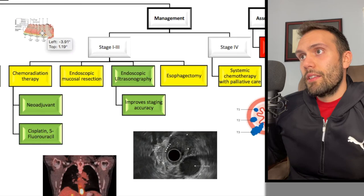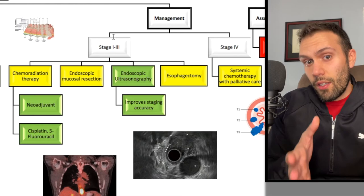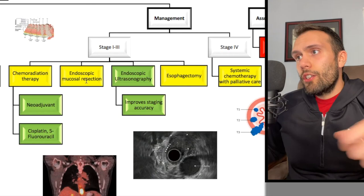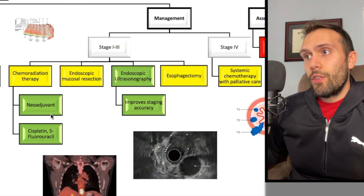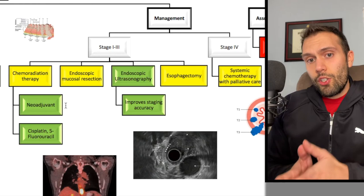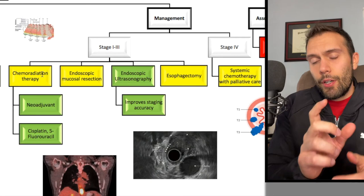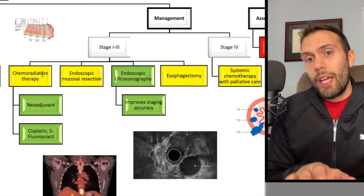For stages one through three — local regional disease — we consider endoscopic mucosal resection for very small tumors. Generally, after biopsy we proceed with neoadjuvant chemoradiation therapy: chemotherapy with cisplatin and 5-fluorouracil given before surgery, plus radiation therapy targeting the tumor site to shrink it. The goal is to reduce the tumor size and address any early spread. After about three to four weeks, surgery is performed — often esophageal resection depending on extent of involvement.